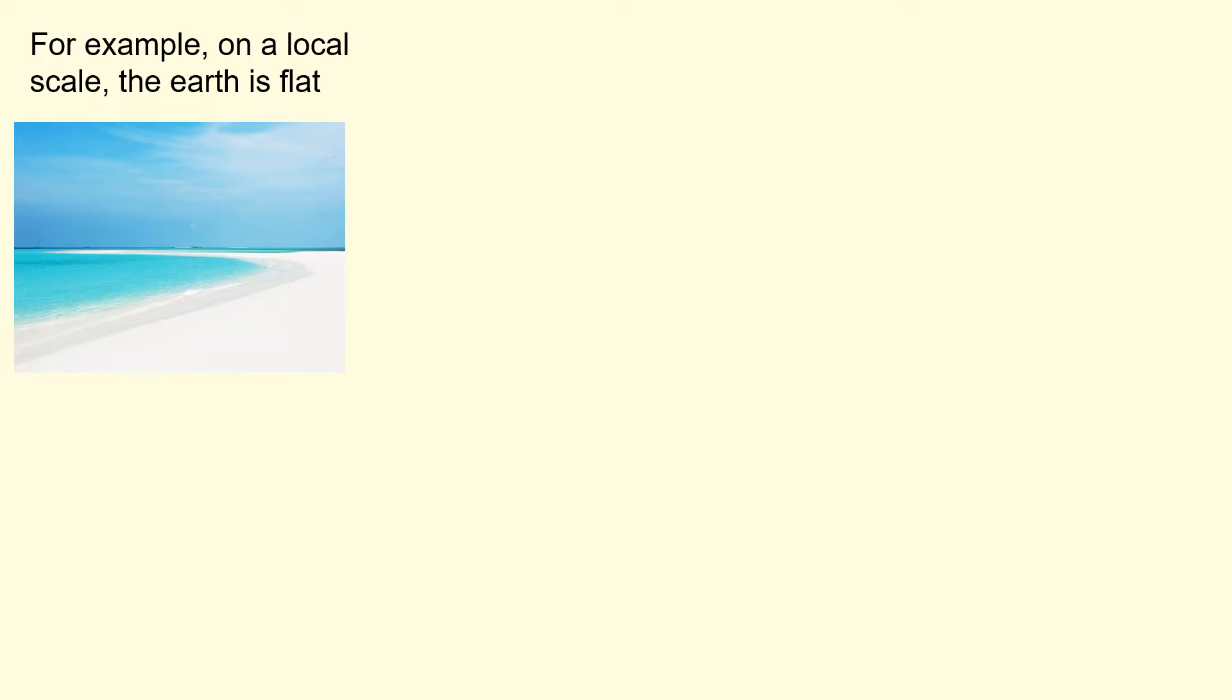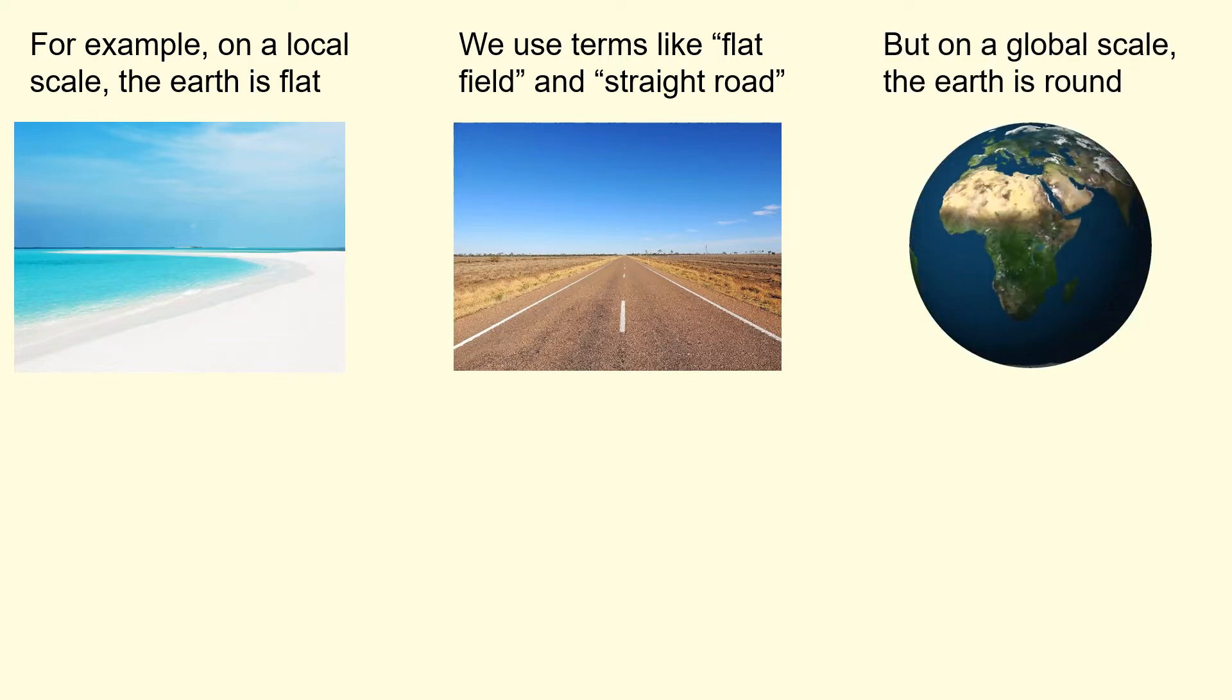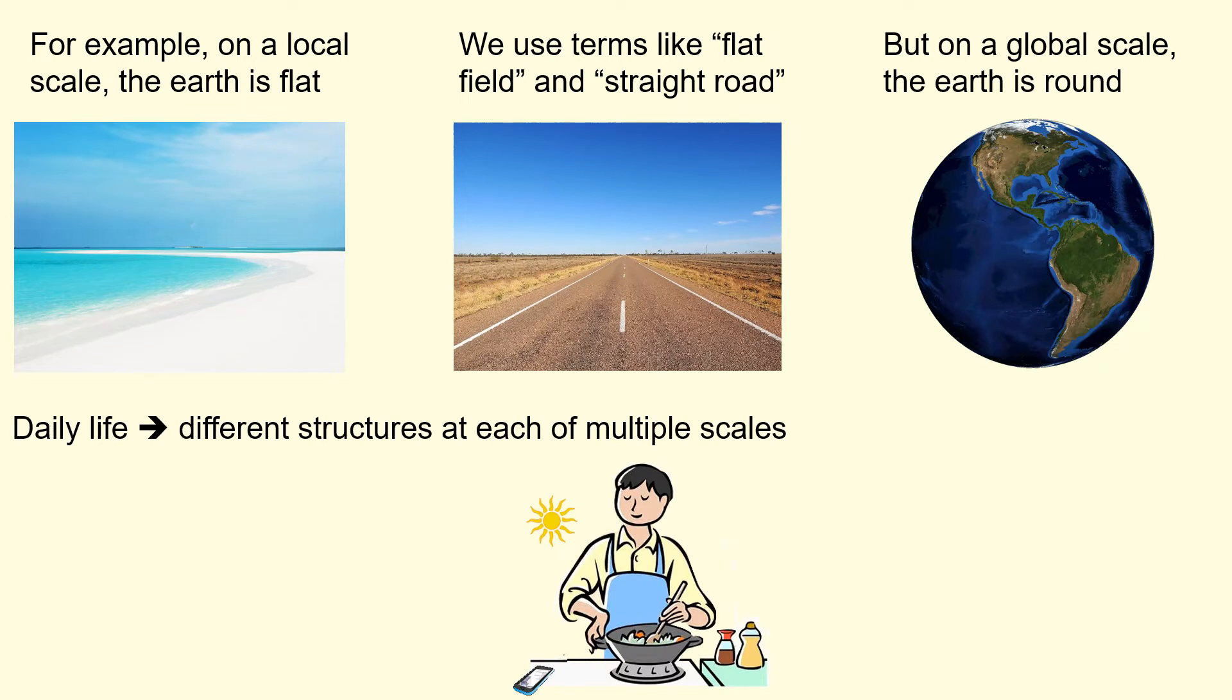For example, on a local scale, the Earth is flat. Flat field, straight road. But on a global scale, the Earth is round. So, in daily life, we have different structures at all sorts of different scales.